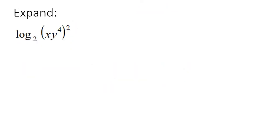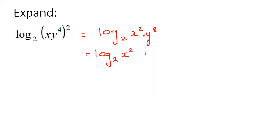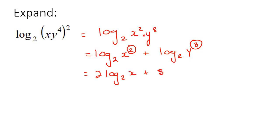Here's our next example. What I would recommend is to take this 2 and distribute it into both of these, giving log₂(x²·y⁸). Now these two are being multiplied, so that becomes a plus when you expand: log₂(x²) plus log₂(y⁸). Now you can see these have exponents, so those go to the front: 2·log₂(x) plus 8·log₂(y).